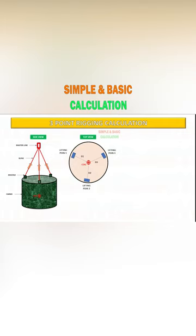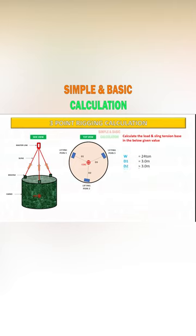Example: Calculate the tension on the sling based on the given values below. The weight of the cargo is 24 tons, and the wire sling length used is 6 meters. We also consider the weight of the cargo to be equally distributed at each lifting point.